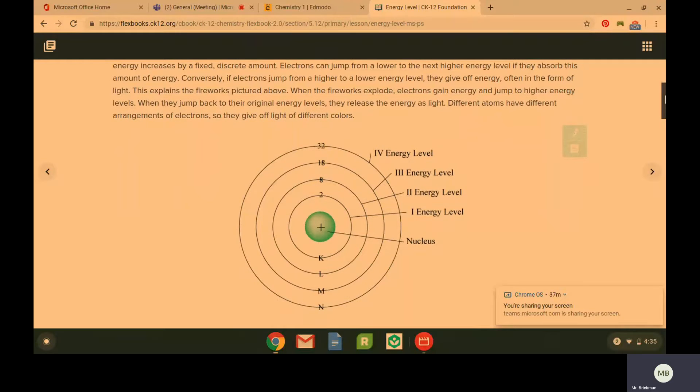So different atoms are going to have different arrangements of electrons and thus give off different colors. So this is applicable to fireworks. So this is something that's actually real world applicable.